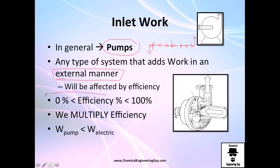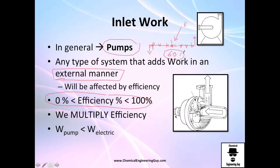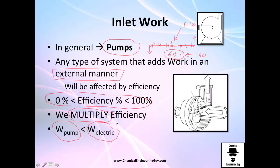One thing we will use throughout the course is the efficiency of the pump. Because if you add, say, 100 watts of electricity, and the pump efficiency is 60%, that means 40% is lost as heat, sound, or vibration, and only 60% goes into the system. So even though we are adding 100 joules electrically, we only consider the 60 joules actually entering the system. The work of a pump in the system will always be less than the electrical work added.